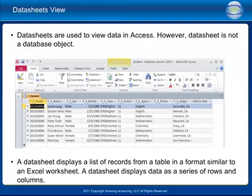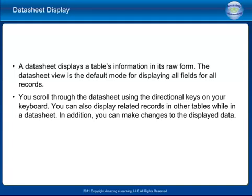Datasheets are used to view data in Access, however a datasheet is not a database object. A datasheet displays a list of records from a table in a format similar to an Excel worksheet — as a series of rows and columns showing the table's information in its raw form. The datasheet view is the default mode for displaying all fields for all records. You scroll through the datasheet using the directional keys, and you can also display related records and make changes to the displayed data.